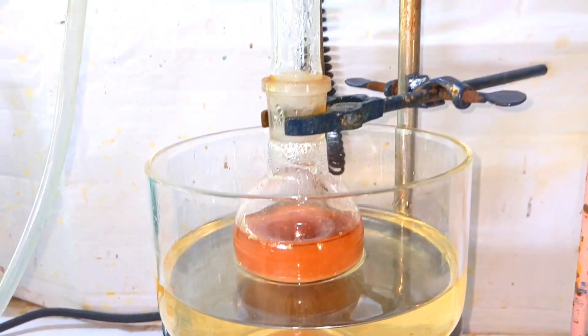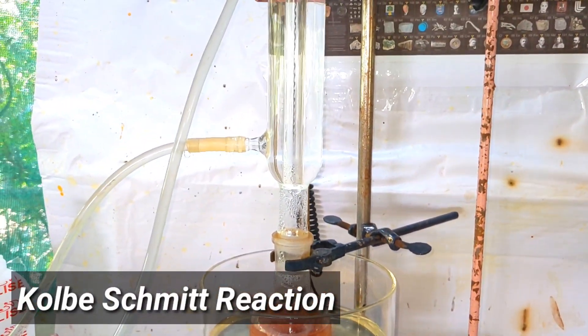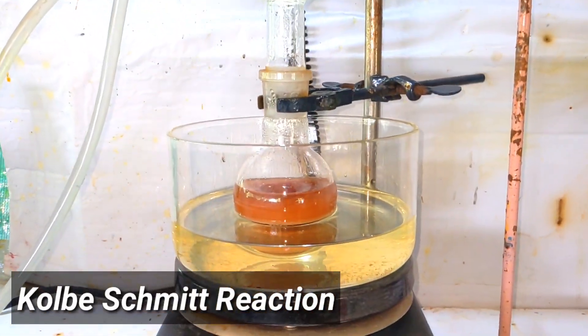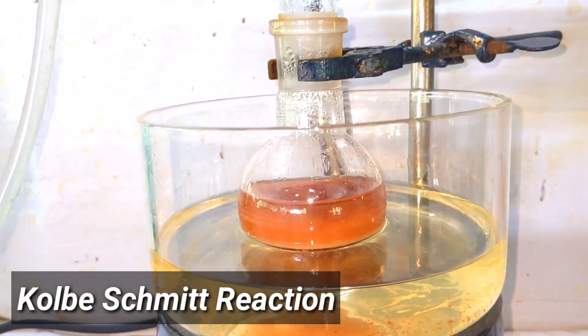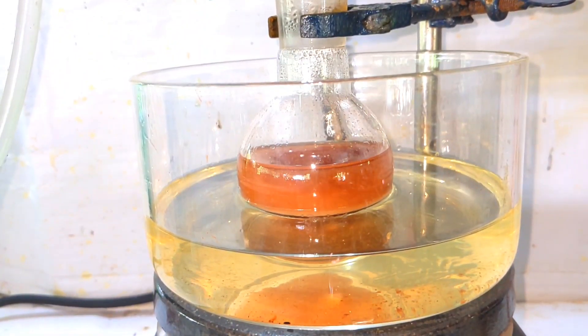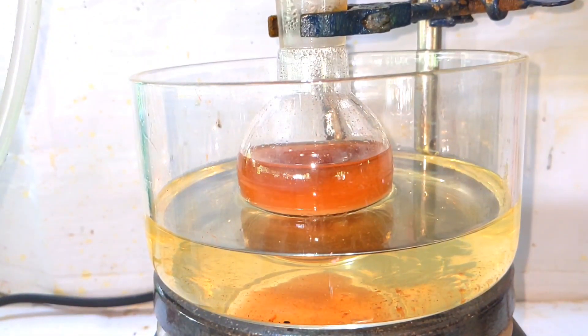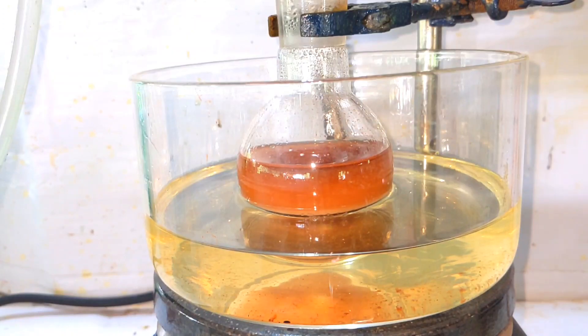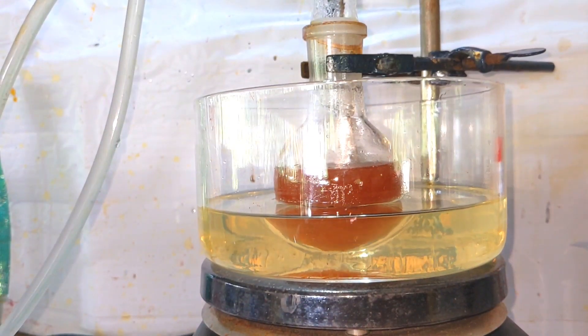What is happening here is called the Kolbe-Schmidt reaction, where the phenylates are carboxylated to form the carboxylic acid. Generally this carboxylation takes place at the ortho position. This reaction usually needs very high temperatures and high pressures for monohydric phenols.